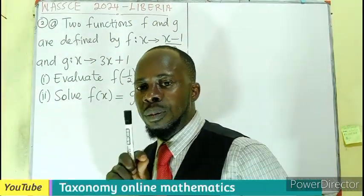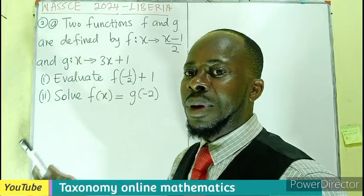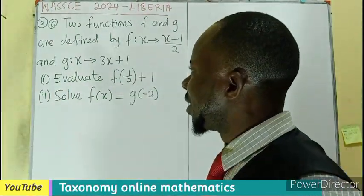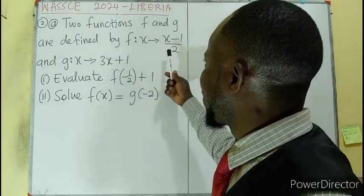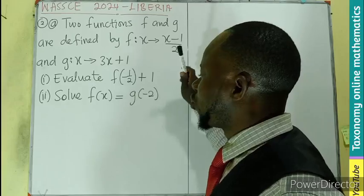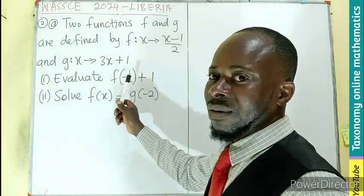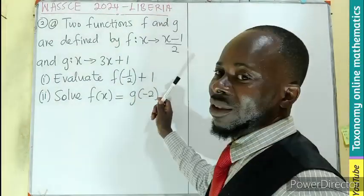Question 2A, WASSCE 2024 for Liberia. We have two functions f and g defined by f(x) mapped to (2x-1)/2 and g(x) mapped to 3x+1. We have to evaluate f(-1/2)+1.